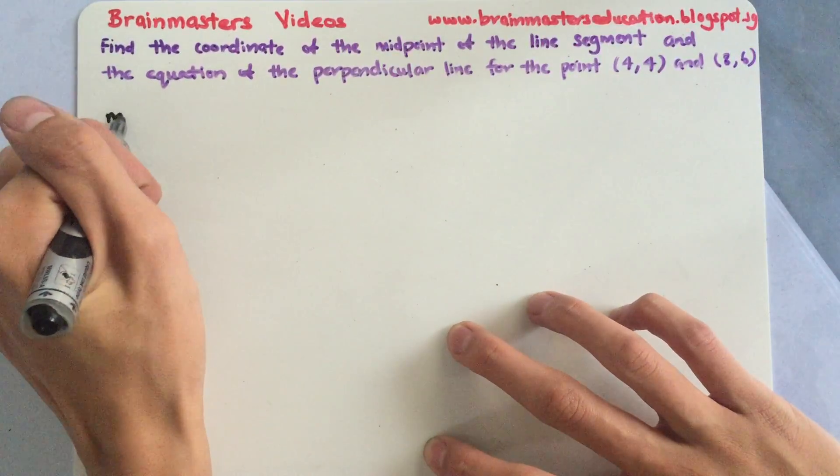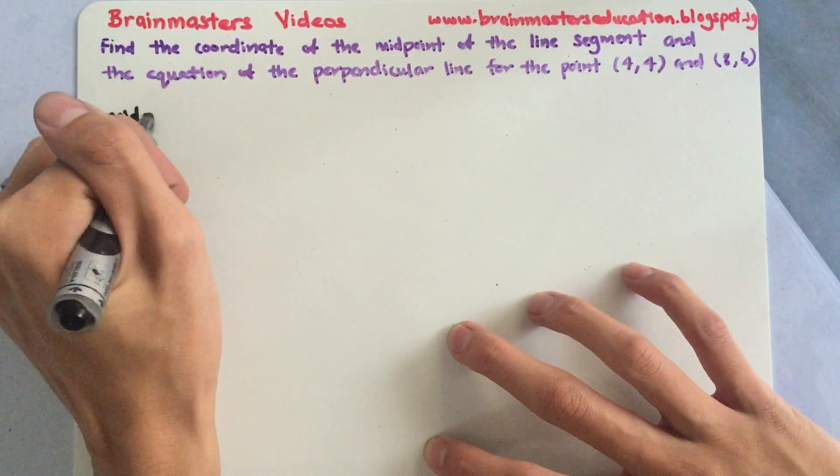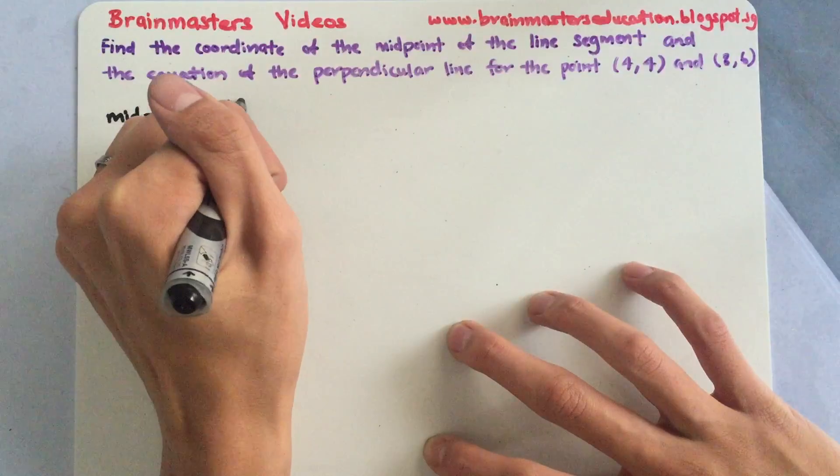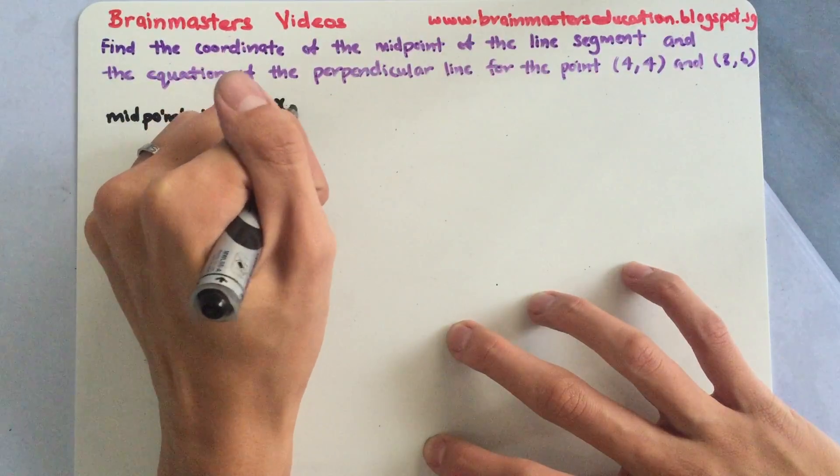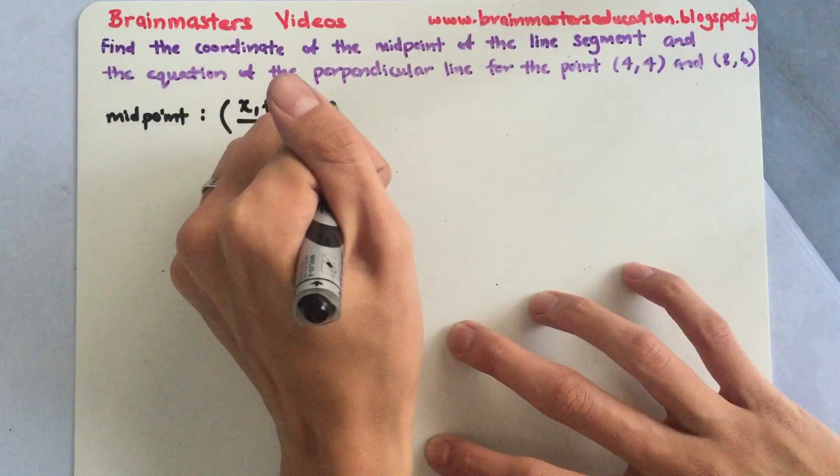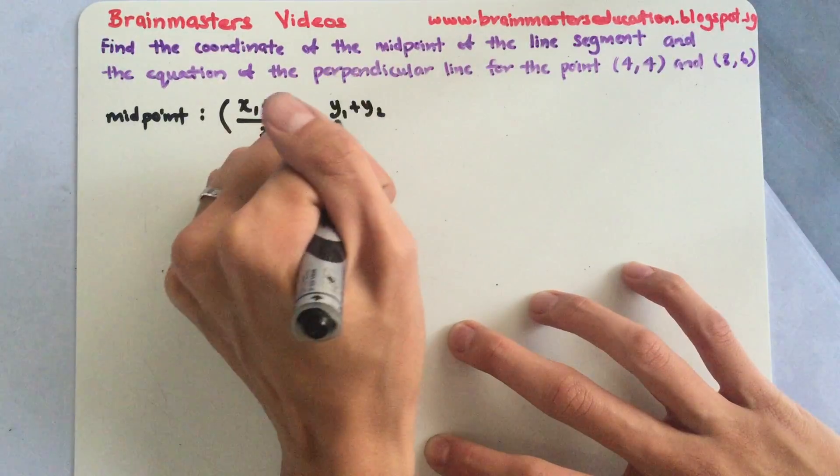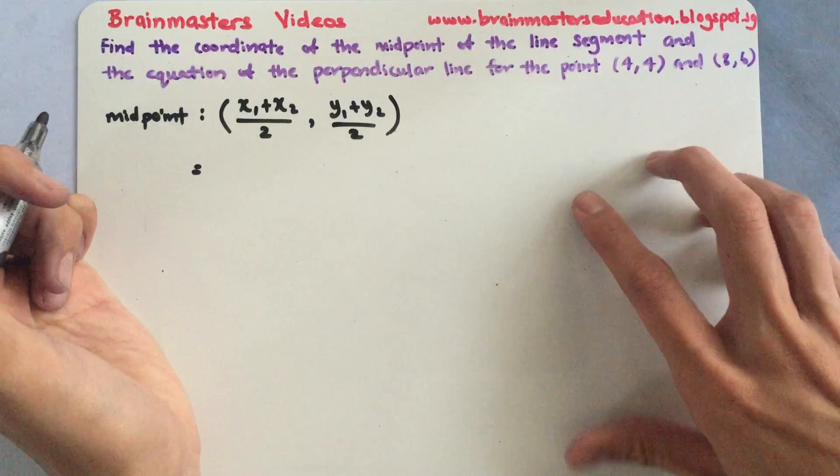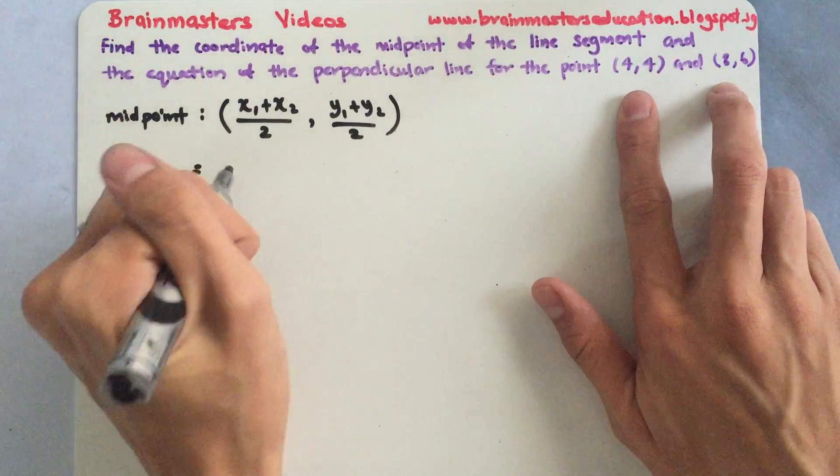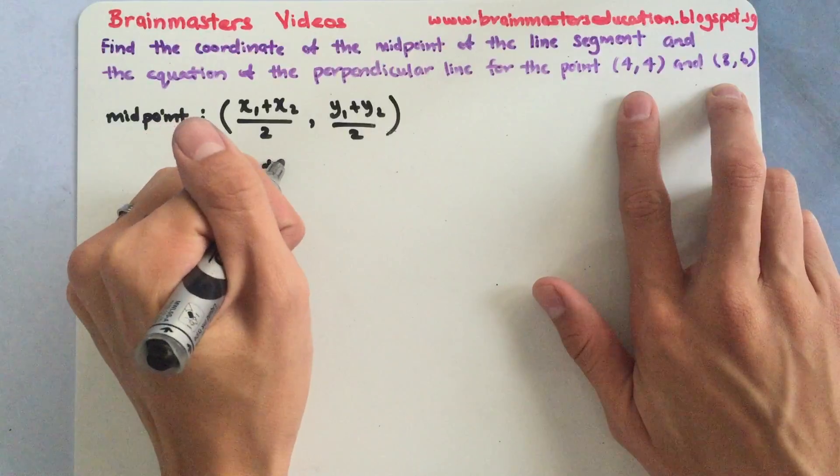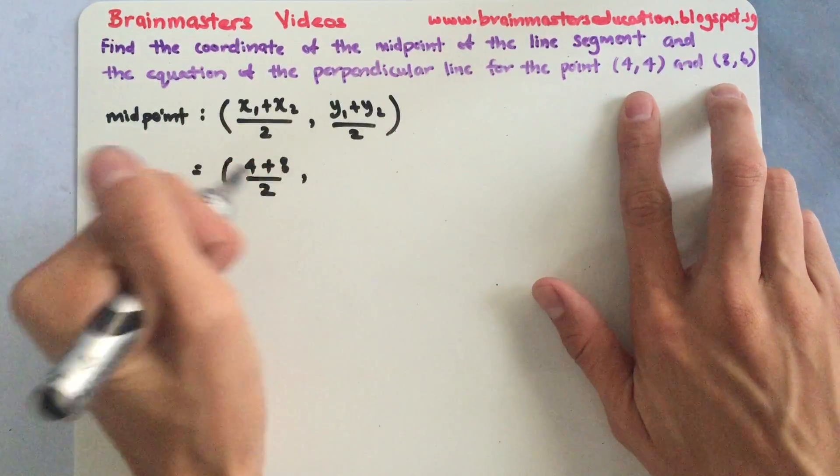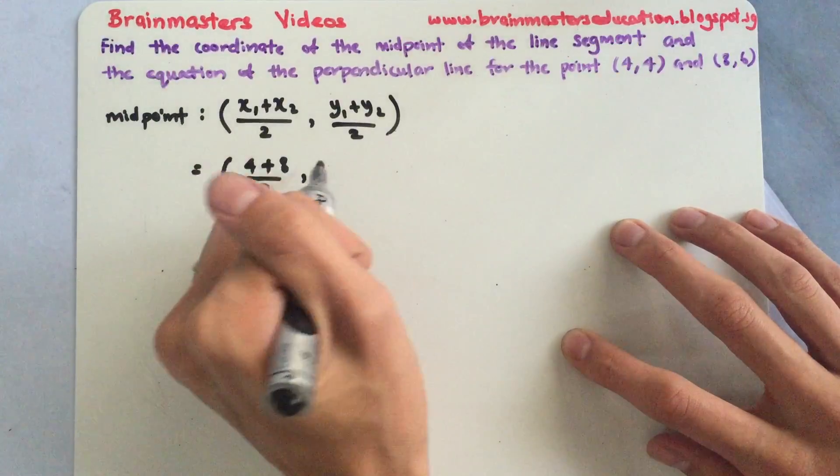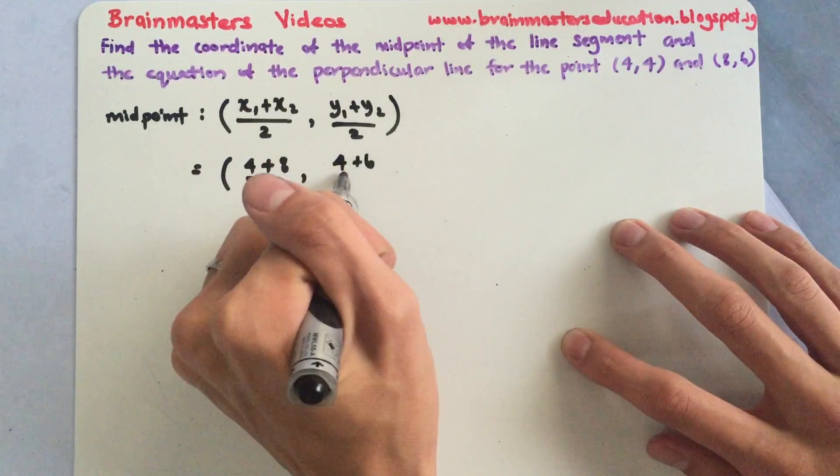Midpoint is a very simple formula, which is just x1 plus x2 over 2 and y1 plus y2 over 2. So x1 and x2, I have these two values, so 8 plus 4 or 4 plus 8. And my y1 plus y2, so it will be 4 plus 6 over 2.